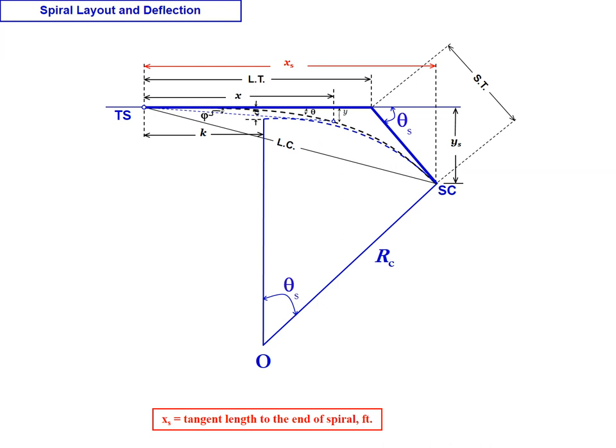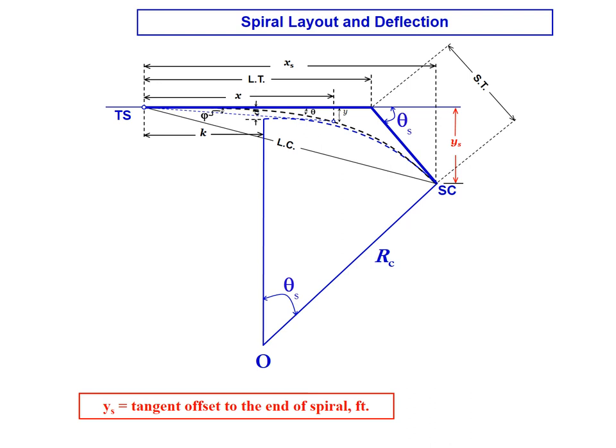X sub s is the overall tangent length to the end of the spiral. And the related value Y sub s is that overall tangent offset to the end of the spiral. It will give you the location of your SC point. So if you have X sub s and Y sub s as it relates to the TS point, you can locate precisely the SC point.